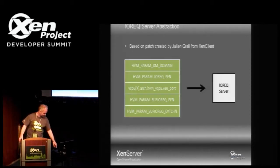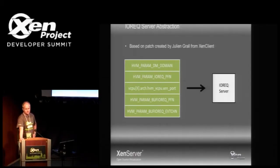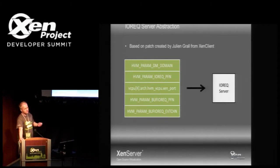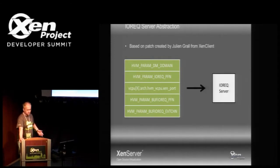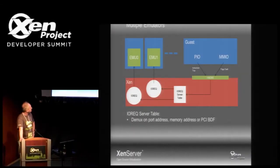Some work that Julian Grawl had done in Xen Client was to come up with the idea of an IRX server abstraction. Normally QEMU talks to Xen using a variety of HVM parameters spread out all over the place. But if you take that list of things it needs — basically a shared page with a per-CPU data structure for passing synchronous IRX from Xen to the emulator, another page for passing asynchronous IRX, and an event channel to signal that ring — and hang them in the same data structure, then you can create this IRX server abstraction. And once you've done that, you can have several of them.